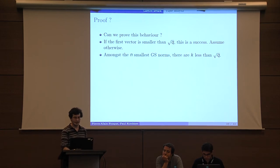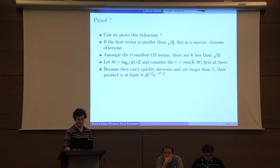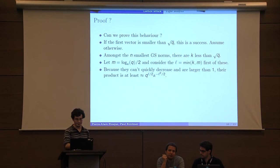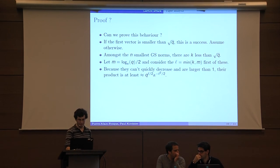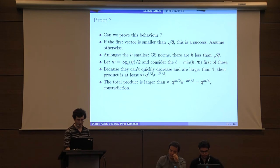Among the N smallest Gram-Schmidt norms, there are K which are less than square root of Q. We let M equal to log alpha of square root of Q, which is just the length of the decrease. We consider the first L, which is the minimum of K and M. First of this, but now Gram-Schmidt norms can't quickly decrease, so they are larger than Q to the L over 2 times alpha to the minus L squared divided by 2. The total product, so the other ones that we did not consider, are larger than square root of Q.